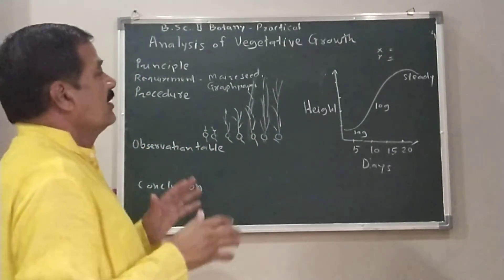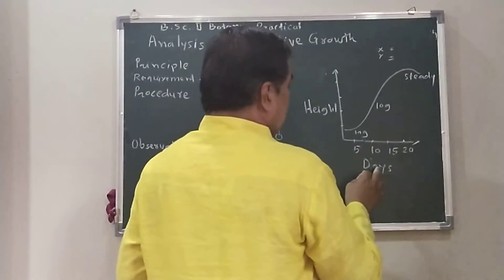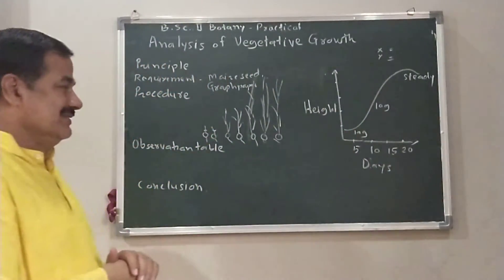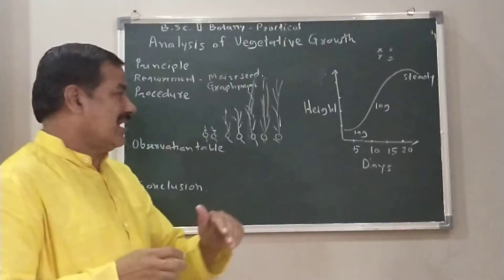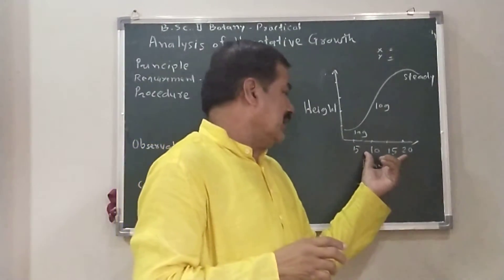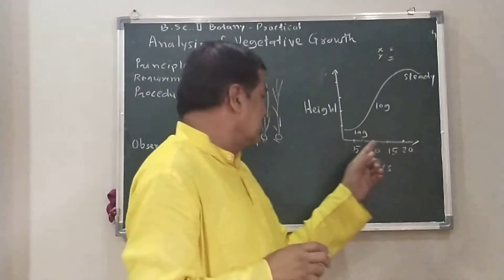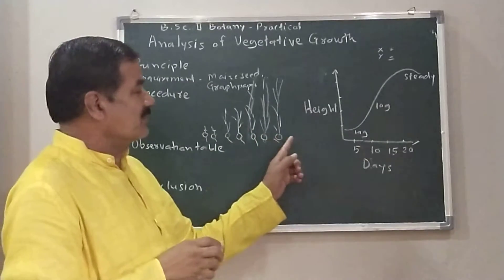Then, plot the graph - days against the height. Here, seven seedlings are considered.